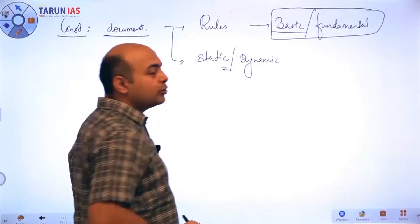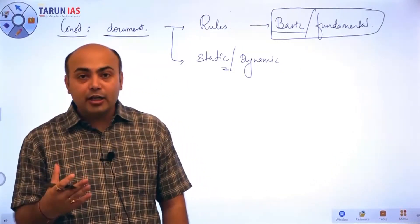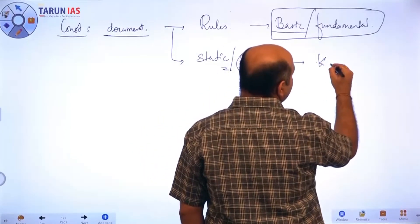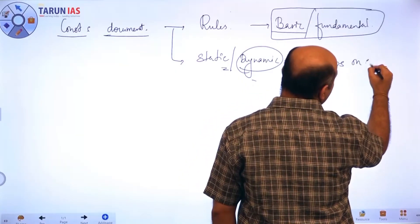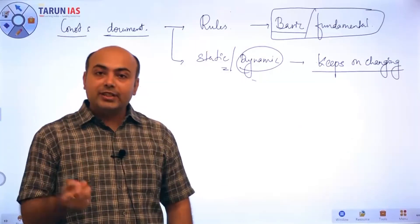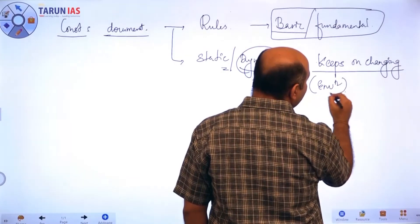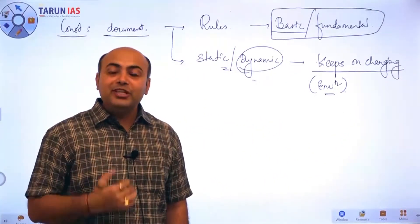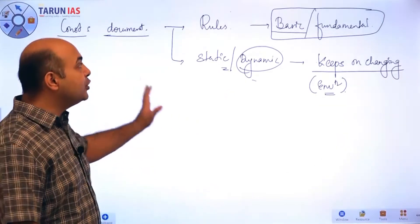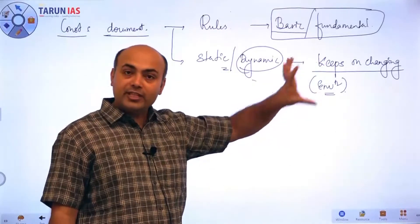Now whenever we talk about these basic rules, can we say they are dynamic or static? They are dynamic — meaning they keep on changing. They are not static. Obviously the environment is not static, and depending upon the environment, conditions, and circumstances, we change these rules. So constitution is a basic set of fundamental rules that are dynamic in nature.